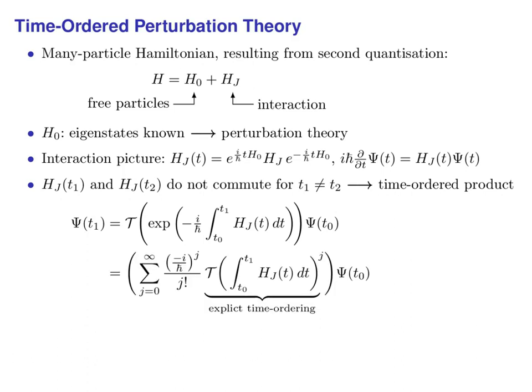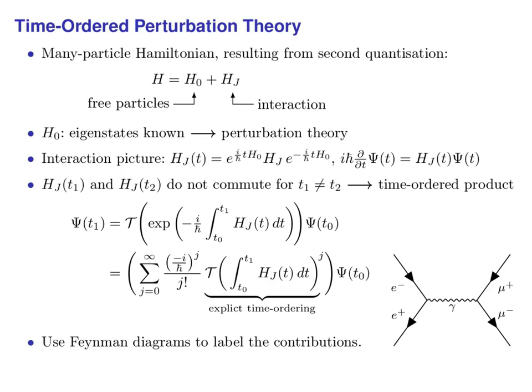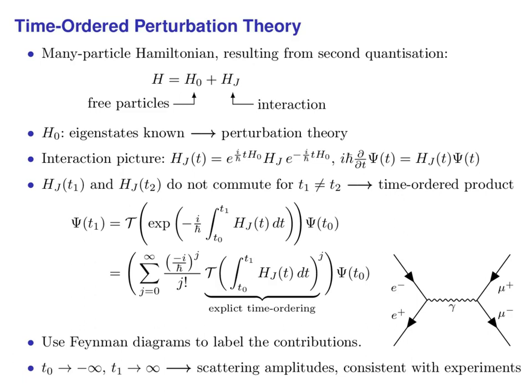For this purpose we expand the exponential into a power series. Then for each power we use the commutator relations to arrange the operators inside the interaction Hamiltonian in chronological order, yielding many contributions. To keep overview, we label them using diagrams — the celebrated Feynman diagrams. By taking the limit of infinite times for the initial and final states, we can calculate scattering amplitudes and compare them to experimental data. The results are extremely accurate, making time-ordered perturbation theory the most successful physical theory we ever had.